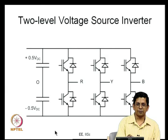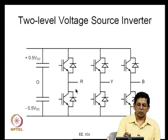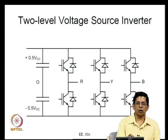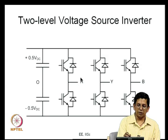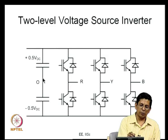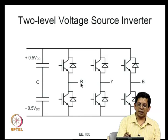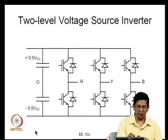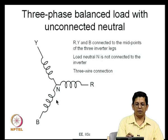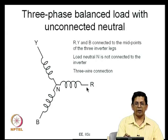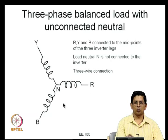For a quick review: in the voltage source inverter, two devices in every leg are switched in a complementary fashion, so every leg is a single pole double throw switch. The pole voltages are measured with respect to the DC midpoint — VRO is the pole voltage and VRY is the line-to-line voltage. The load is a star-connected RYB load whose neutral n is not connected anywhere, and VRn is the output phase voltage of the inverter.